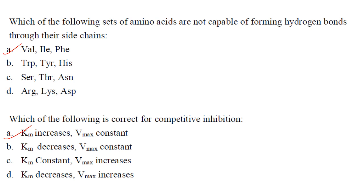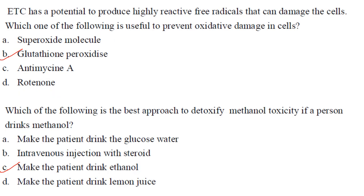Which of the following sets of amino acids are not capable of forming hydrogen bond through their side chains? Valine, isoleucine and phenylalanine cannot form hydrogen bonds because they have no hydrogen donor or acceptor atom in their side chains. Answer is option A. Which of the following is correct for competitive inhibition? This is a regular question for majority of the MSc entrance exams. Km increases, Vmax remains constant. That is the answer. Electron transport chain has a potential to produce highly reactive free radicals that can damage the cell. Which one of the following is useful to prevent oxidative damage in cells? It is through glutathione peroxidase. Answer is B.